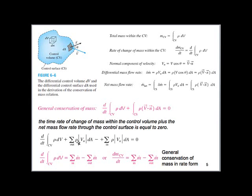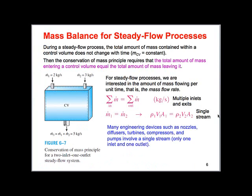If something is steady — meaning not varying with time — the accumulation term goes to zero. When there's no accumulation of mass in the system, everything coming in is coming out. We can simplify the conservation of mass equation to: sum of mass flow rates in equals sum of mass flow rates out. For example, with two inputs of 3 and 2 kilograms per second, we'd need 5 kilograms per second coming out of the bottom of the tank.